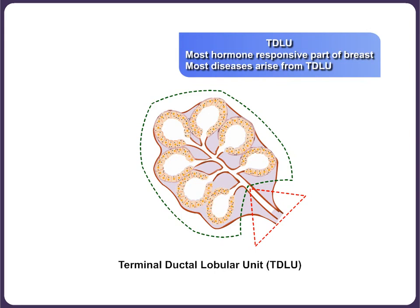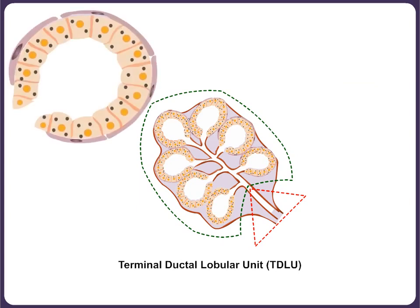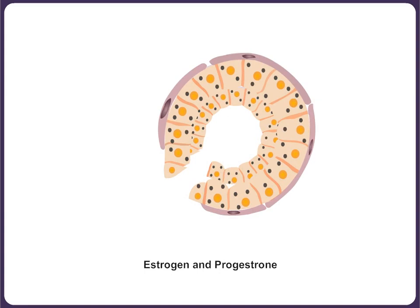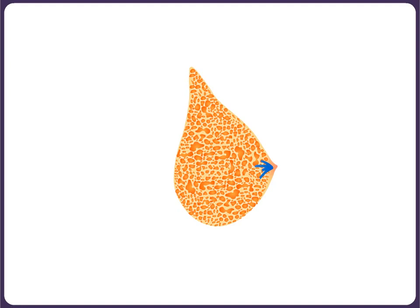The terminal ducts together with the lobules constitute the terminal ductal lobular unit, known by the acronym TDLU. TDLU is the most hormone-responsive and most active part of the mammary gland. The epithelial lining of the ducts and acini has a luminal and a basal cell layer. The growth of these cells is controlled by the hormones estrogen and progesterone. Estrogen causes development of the ducts and stroma with fat deposition. Progesterone causes maturation and branching of the ductal lobular system primed by estrogen.